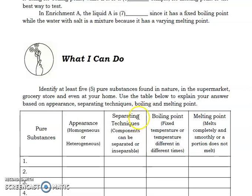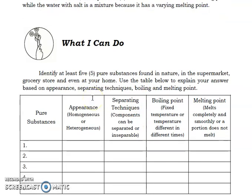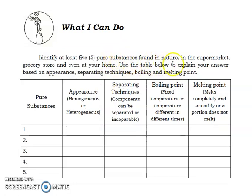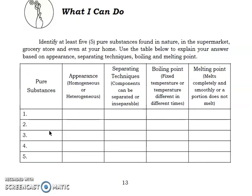Let's proceed with the What I Can Do. Here, this is our seventh activity. You're going to identify five pure substances found in nature, supermarket, grocery store, even at your home. You're going to complete the following table. You will describe their appearance as homogenous or heterogeneous. The separating techniques, components can be separated or inseparable. The boiling point for liquid pure substances: fixed temperature or temperature different in different times. Melting point for solid pure substances: melts completely and smoothly or a portion does not melt. It's up to you what pure substances you will put here. That is for the What I Can Do, our seventh activity for this module.